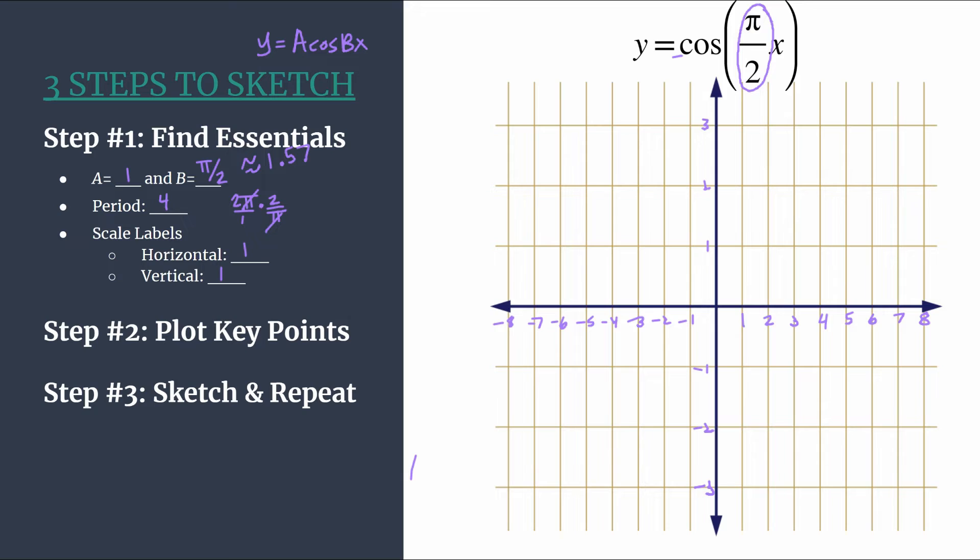So we labeled our horizontal axis. We're labeling our vertical axis. We're excited to count by ones. We are all set up. Now we can move on to the big step. Step two, plot key points. So our cosine pattern, our standard cosine pattern is maximum zero, minimum zero. We don't see any negative signs out front. So this is not reflecting. We know we are good to stick with that.